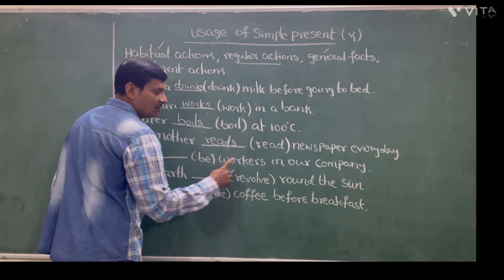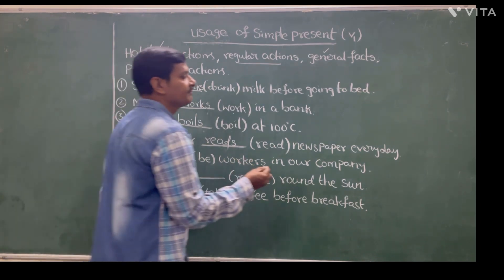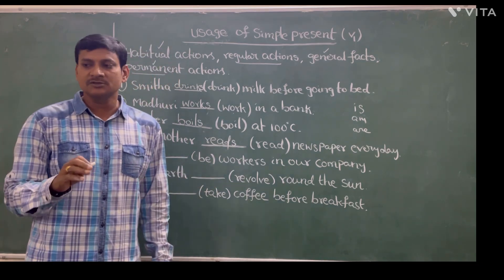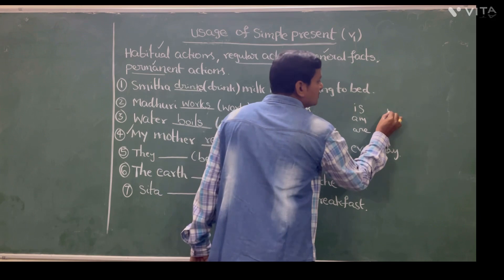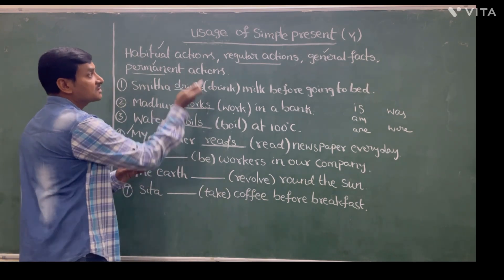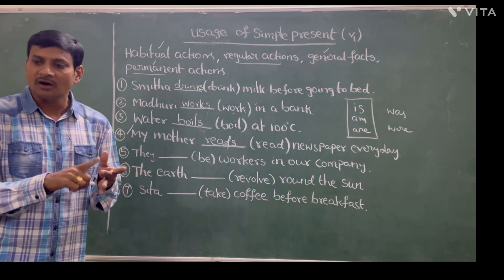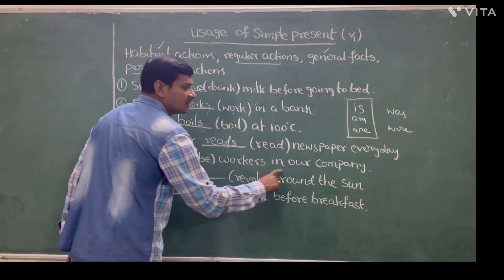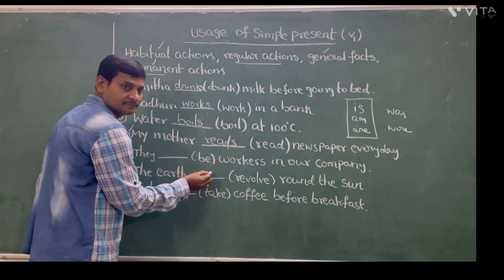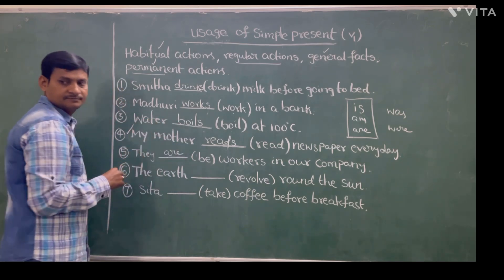Next: They ___ be workers in our company. There is a BE form here. The BE forms are: is, am, are — these are present BE forms — and was, were — past BE forms. Since we are discussing simple present, we fill the blank with 'are'. They are workers in our company — this is a permanent action.